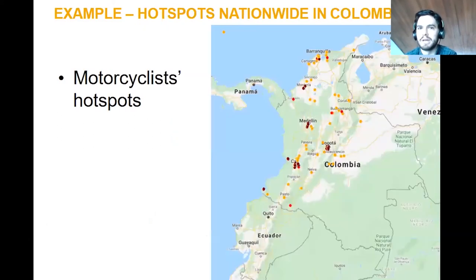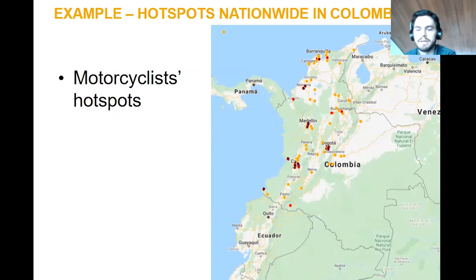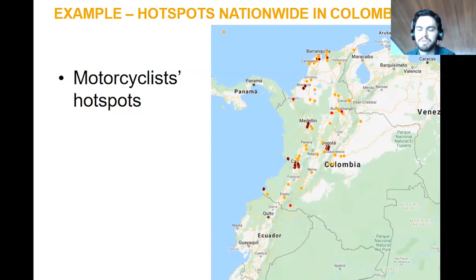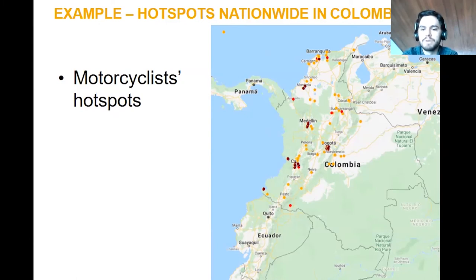Colombia is probably as big as Maharashtra but with only 50 million people. This is an analysis that can be done at a state level or maybe at a higher level. We did hotspots for the whole country — it creates a polygon where you can count the amount of victims inside, giving you the places with the highest amount of victims in the whole country. We're using this for a plan for improving motorcycle road safety in Colombia.